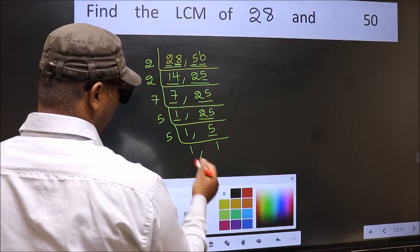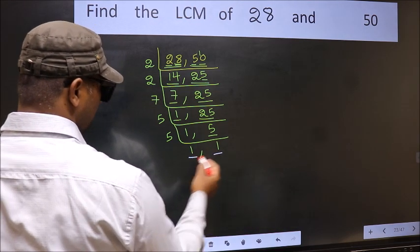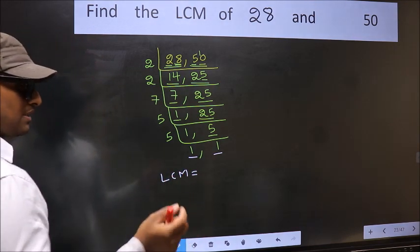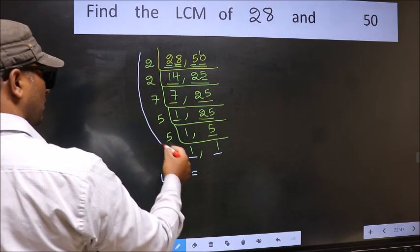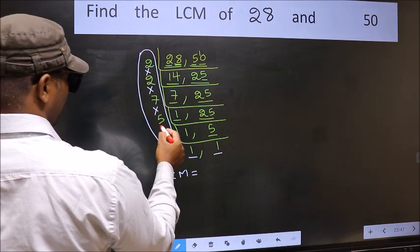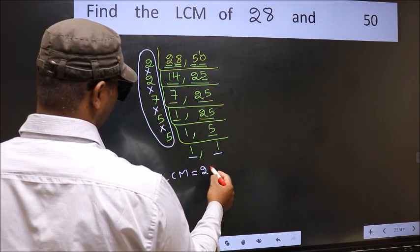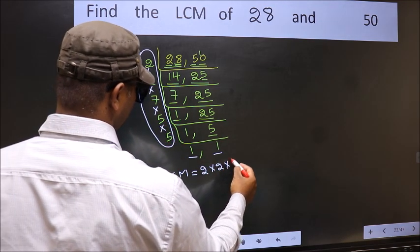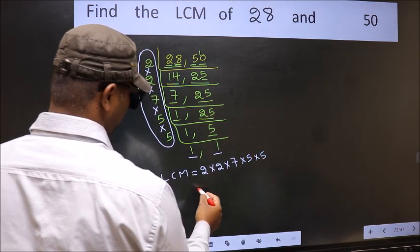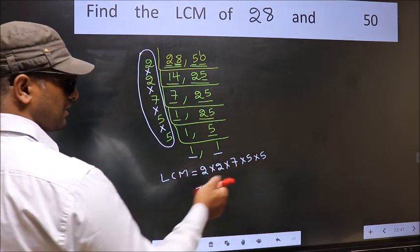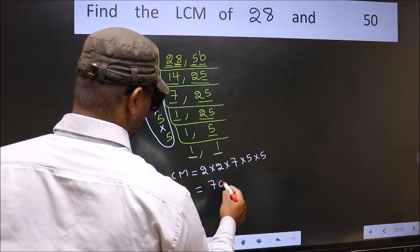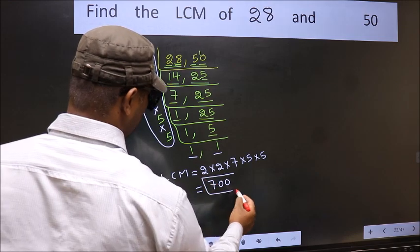So we got 1 in both the places. So our LCM is, LCM is the product of these numbers, that is 2 into 2 into 7 into 5 into 5. When we multiply these numbers, we get 700 is our LCM.